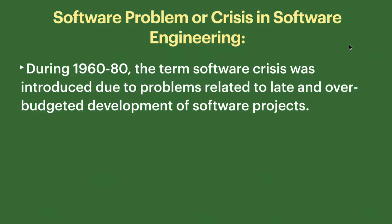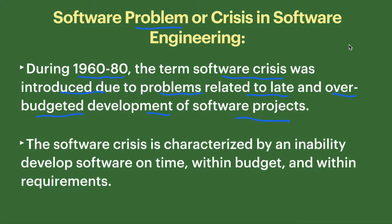Software crisis is also called the problem of the software. During 1960 to 1980, the term software crisis was introduced due to problems related to late and over-budgeted development of software projects. Before 1960, software engineers were not aware of software crisis. Software crisis is characterized by an inability to develop software on time, within budget, and within requirement.